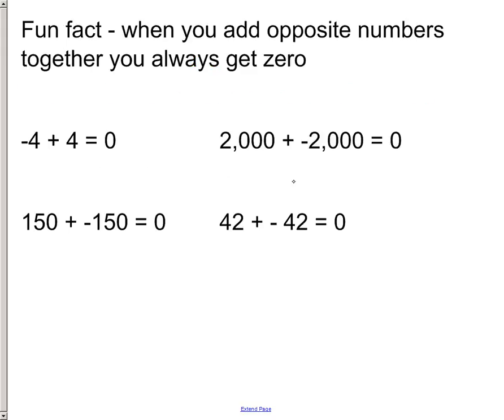And here's a fun fact for you. When you add opposite numbers together you always get 0. So here's negative 4 with its opposite of positive 4. Add them up and you get 0. You have 2,000 here with its opposite of negative 2,000. Add them up and you get 0. Same thing. You can see the other two examples I have for you there.